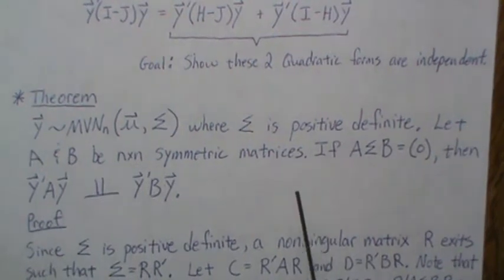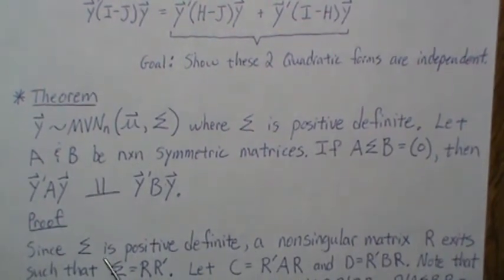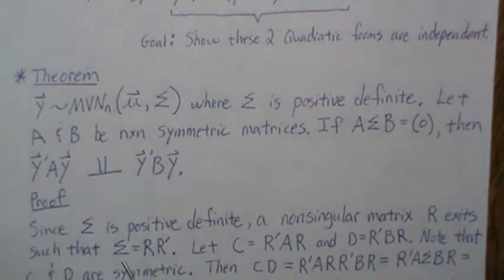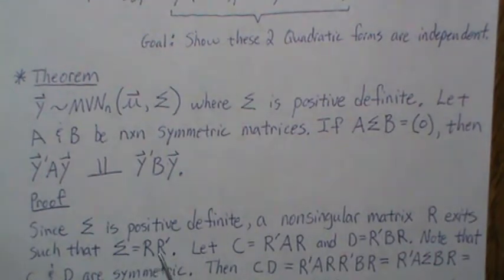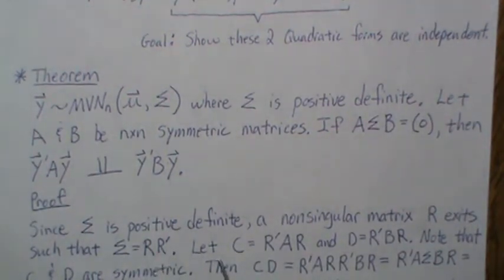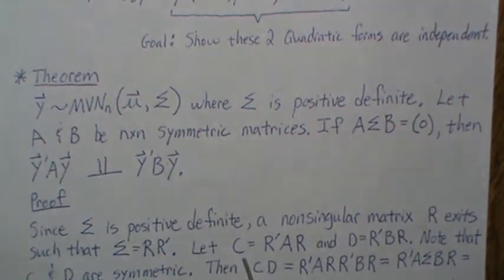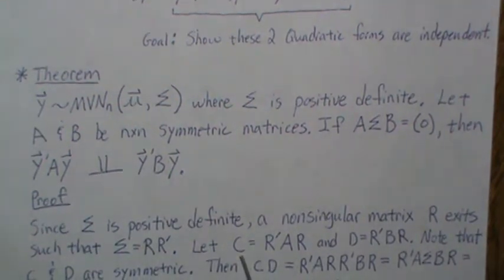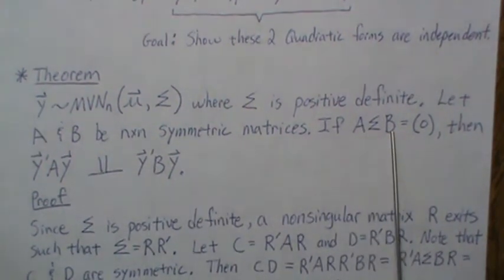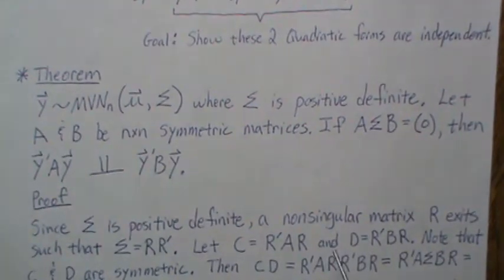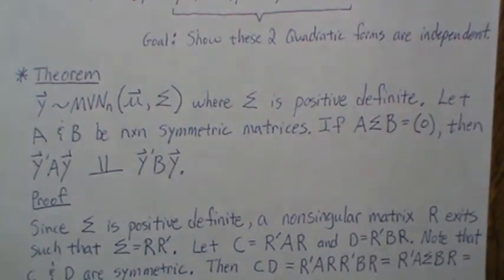So let's go. Since Σ is positive definite, a nonsingular matrix R exists such that Σ equals R R transpose. Whether this is the square root matrix or Cholesky's decomposition, there exists an R such that this is true. Now let's let the matrix C, and I'm just going to go in order here. We have A and B, and we'll use C, D, E, and F. We're just going to go in order.